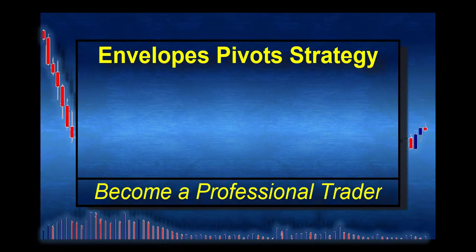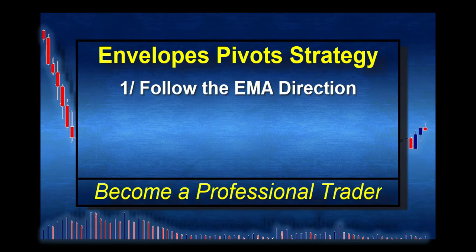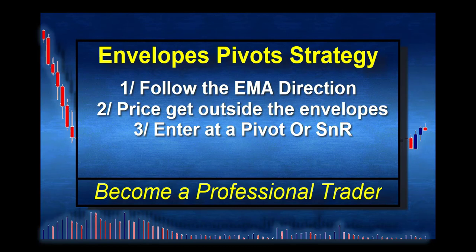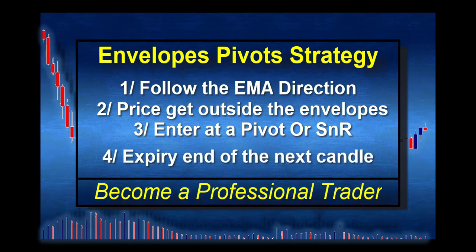To summarize quickly: if the EMA is strongly in one direction, you follow the trend. If the EMA is nearly flat, you can trade in both directions. Second, you wait for the price to be outside the envelope. When it is, you enter when it touches a pivot point or support and resistance for the aggressive approach. For the conservative approach, you wait for the candle to make a nice wick rejecting the level and closing very near it — that's your entry at the end of the candle. Expiration is always the end of the next candle after the first touch. Comment below or ask me on Facebook or Telegram if you have any questions.